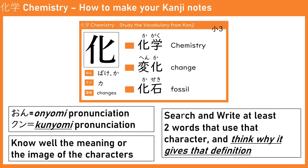In the video you will see a panel like this. You will see the character and you will see the readings — onyomi and kunyomi. If you have learned kanji before, you will need to know both onyomi and kunyomi. Onyomi, as I wrote in hiragana, refers to the reading based on the Japanese reading.